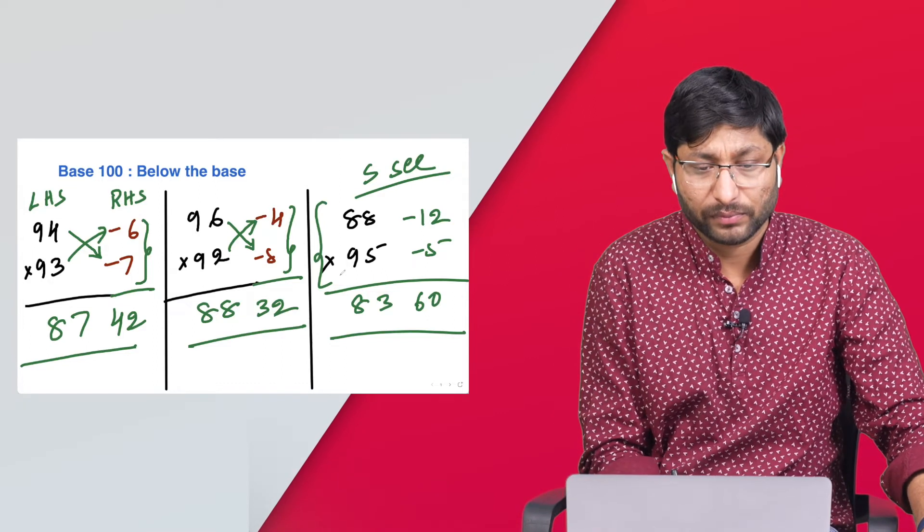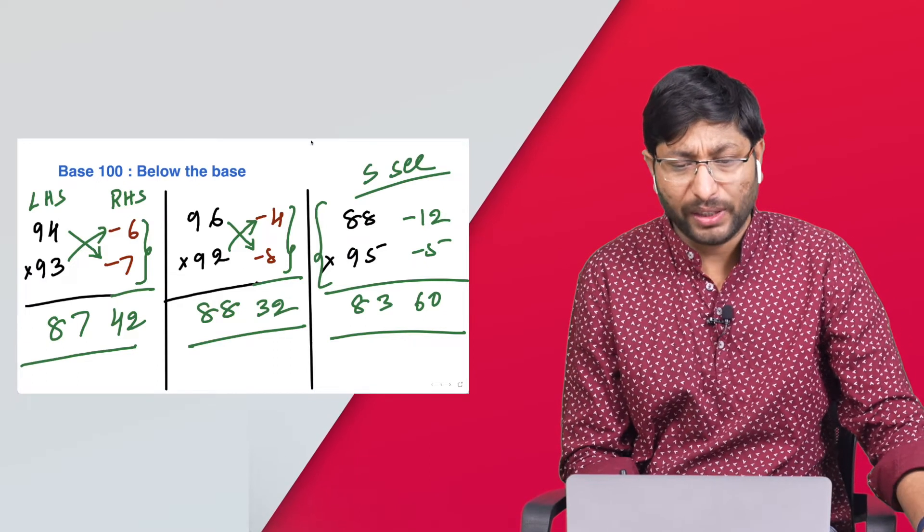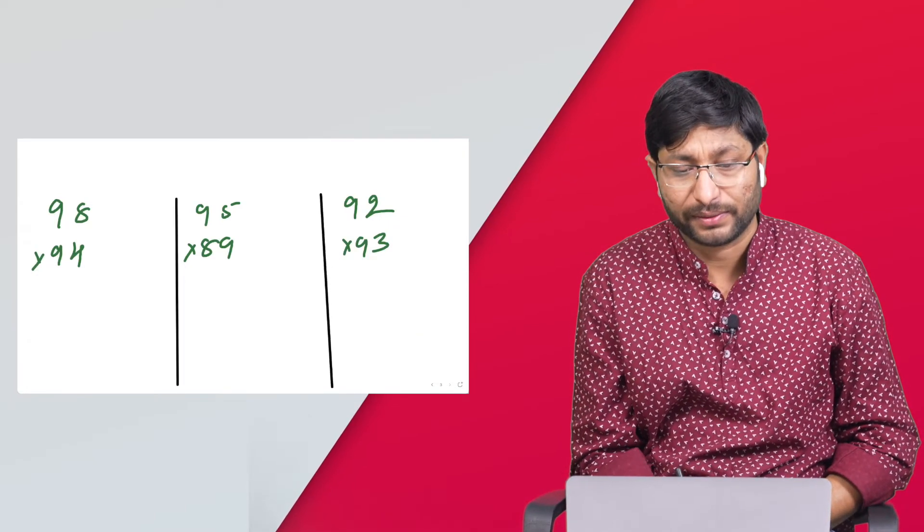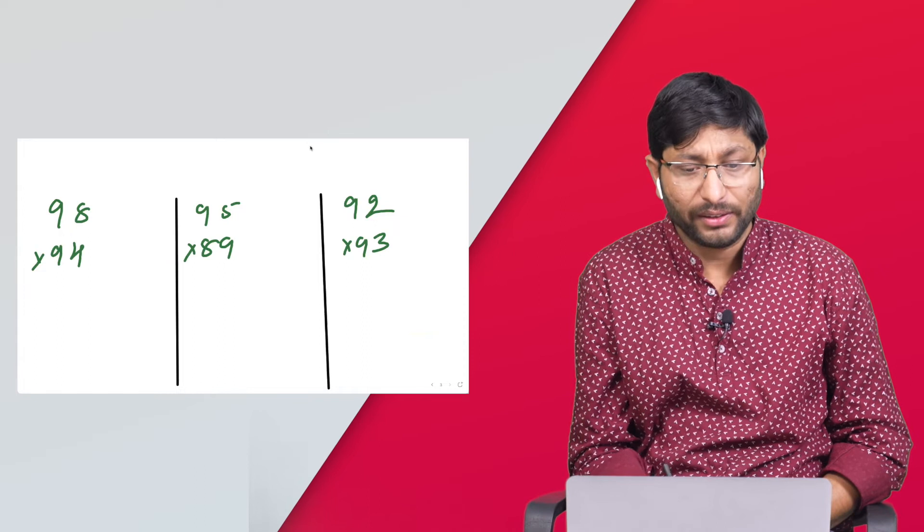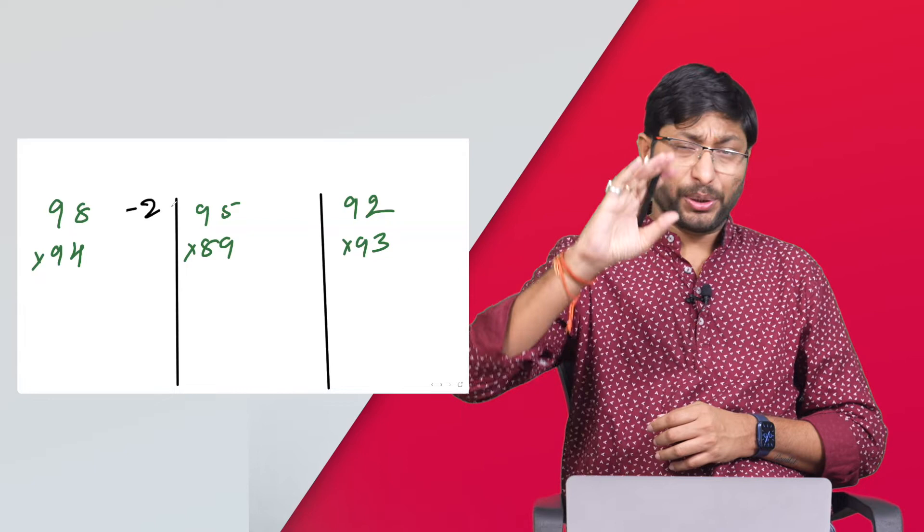Let me give you a few more problems to make you perfect in the concept. Next, one more, a few more problems. 98 multiply with 94, 95 multiply with 89, let's say 92 multiply with 93.